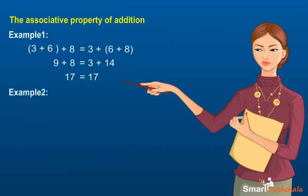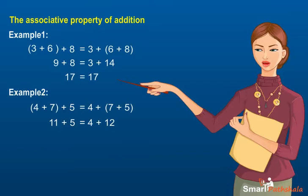Example 2: (4 + 7) + 5 = 4 + (7 + 5). So, 11 + 5 = 4 + 12, and 16 = 16. Notice that the sum is the same no matter what way you group the addends.